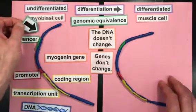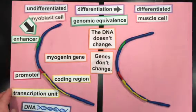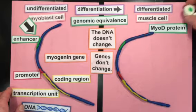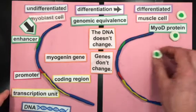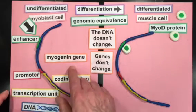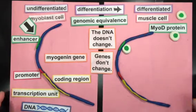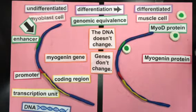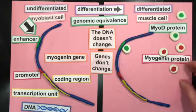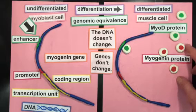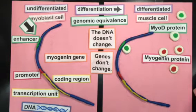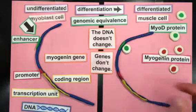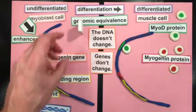The bottom line in this whole story is that the enhancer is very important. Early in differentiation of muscle cells, a new protein gets made called MyoD. The MyoD protein binds to the DNA of the enhancer of the myogenin gene and activates expression of the myogenin gene, leading to production of the myogenin protein. The myogenin protein also binds to enhancers of other genes and helps activate their expression. In that way, the changes during cell differentiation include a series of dominoes — genes following one after another.